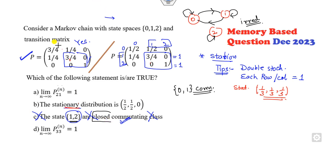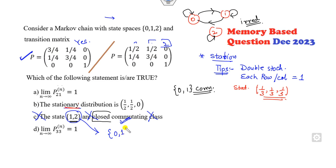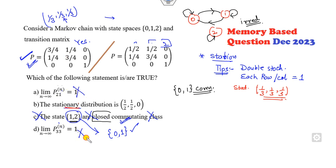So if you want to find the communicating class, what is the right option? Looking at this matrix, the sum of each row is 1. You can check whether the option in your examination uses {0, 1} instead of {1, 2} — if it is {0, 1}, then it is the correct option. Now, what about the stationary distribution? If my matrix is this one, the answer is 1/3, 1/3, 1/3. So clearly state 2 and this matrix — the second option is wrong, this option is also wrong.